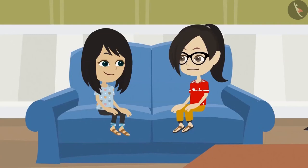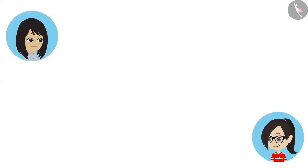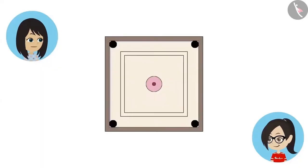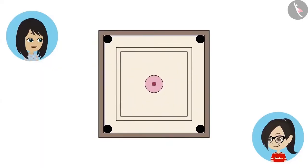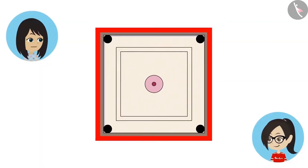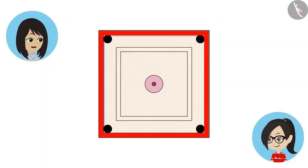That means the design of a circle can be a part of another design or object. Yes, look at the carom board. Carom board is in the shape of a square, but it has four circle-shaped holes. And the center also has a circular design.